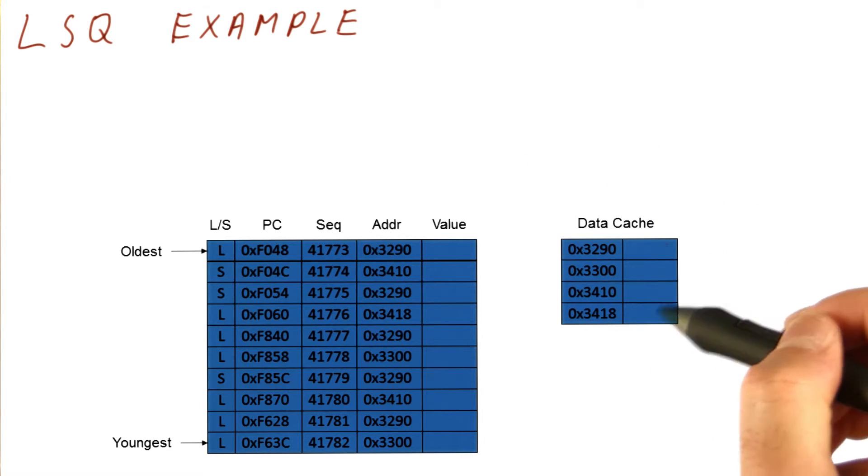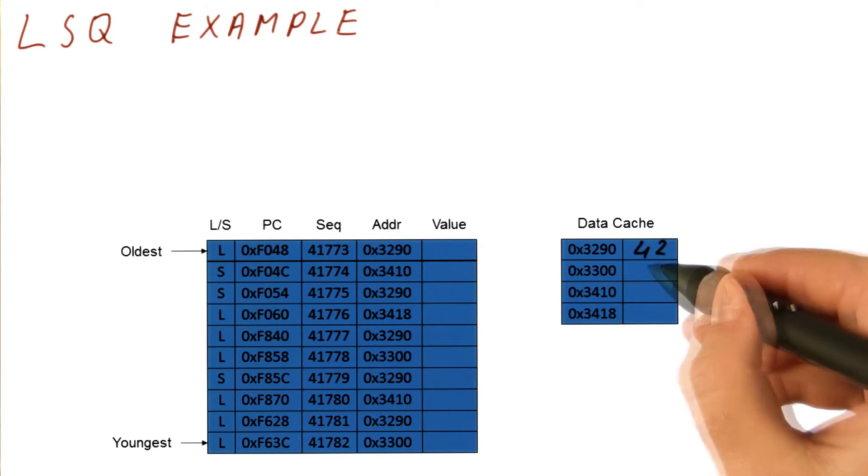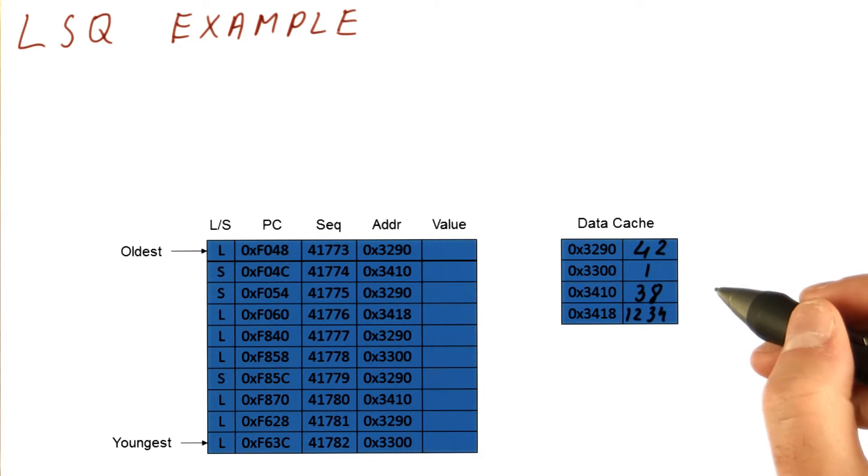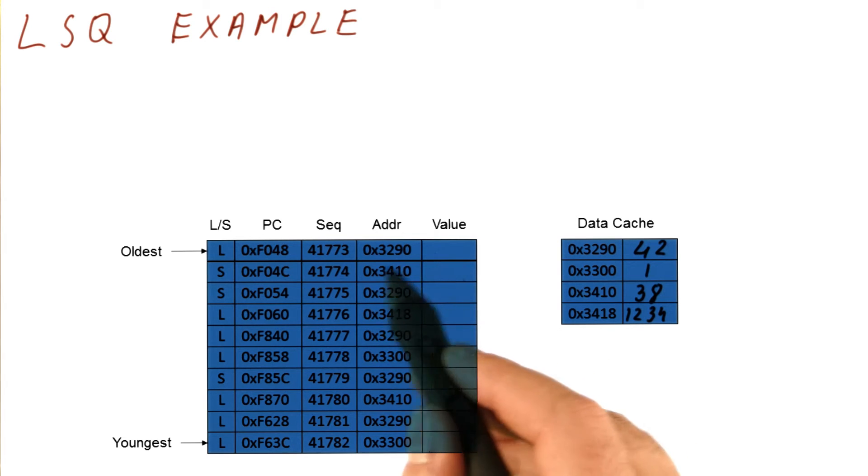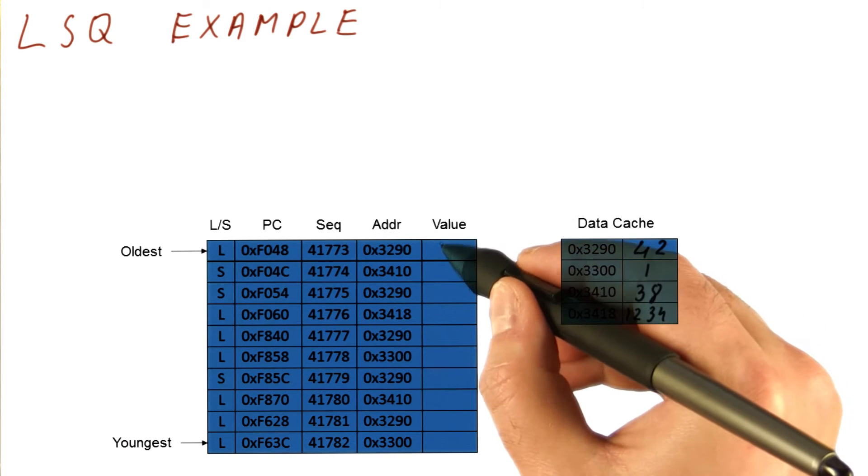And let's say that this is the content of the data cache. Let's say that the initial content of the data cache is 42 here, 1 here, 38 here, and 1, 2, 3, 4 here. This load goes first, accesses address 3290, which is this one, and loads the value of 42.